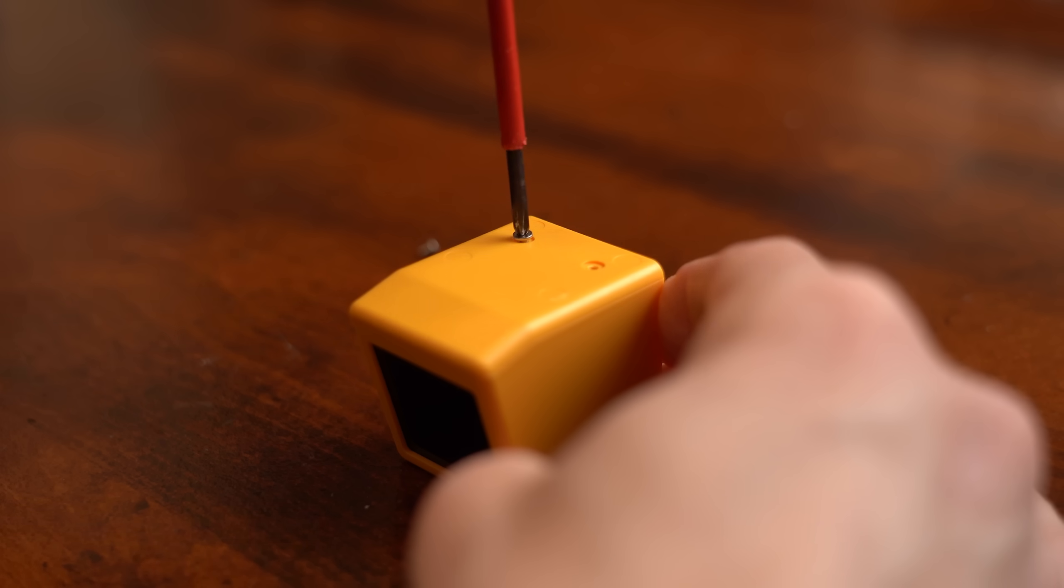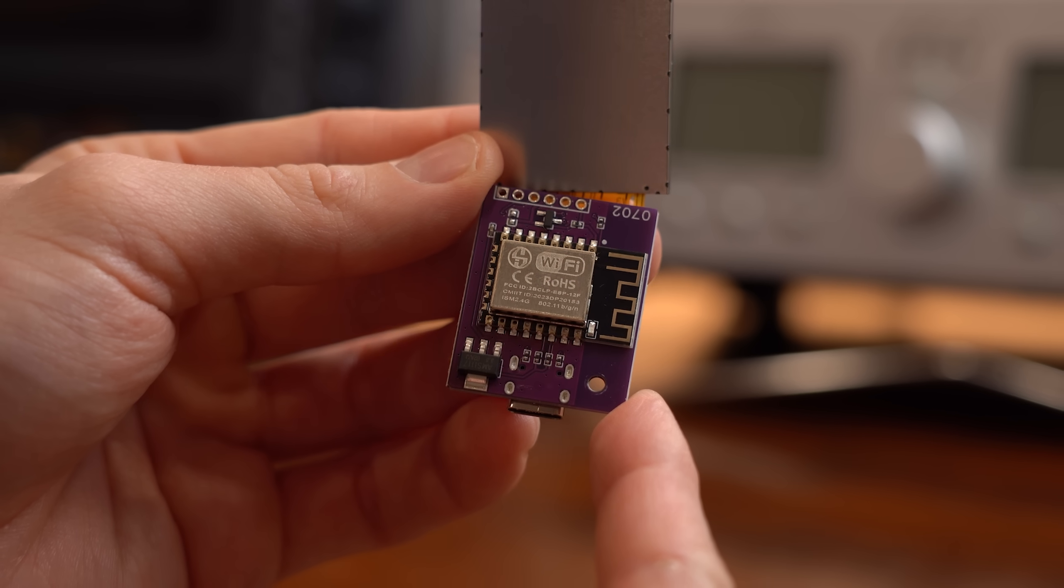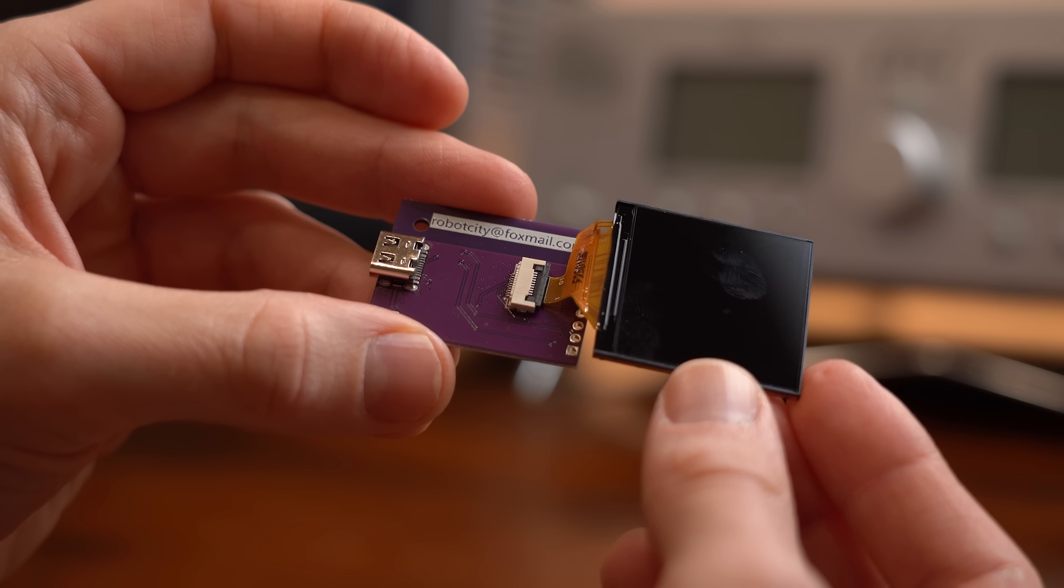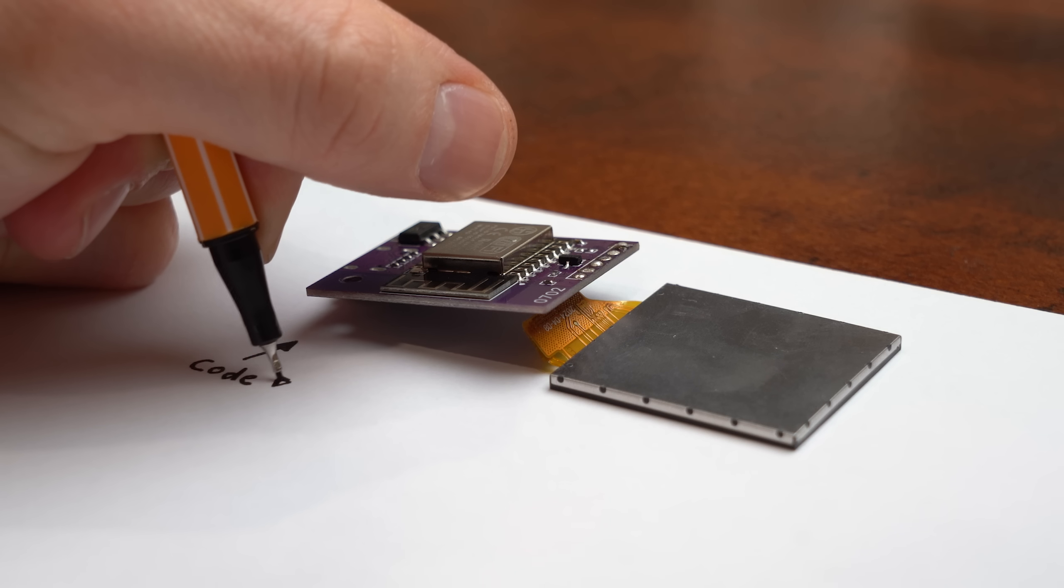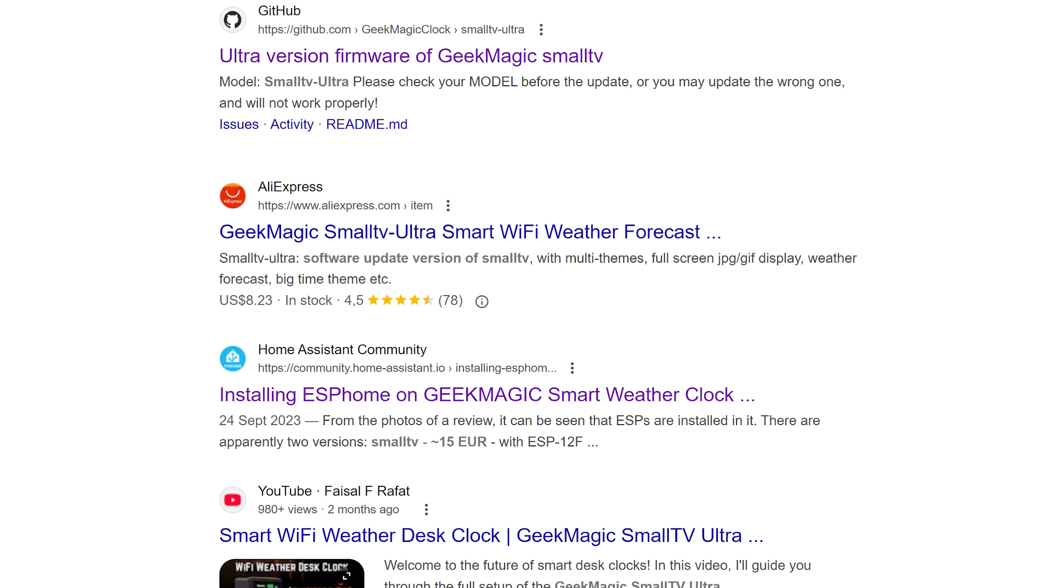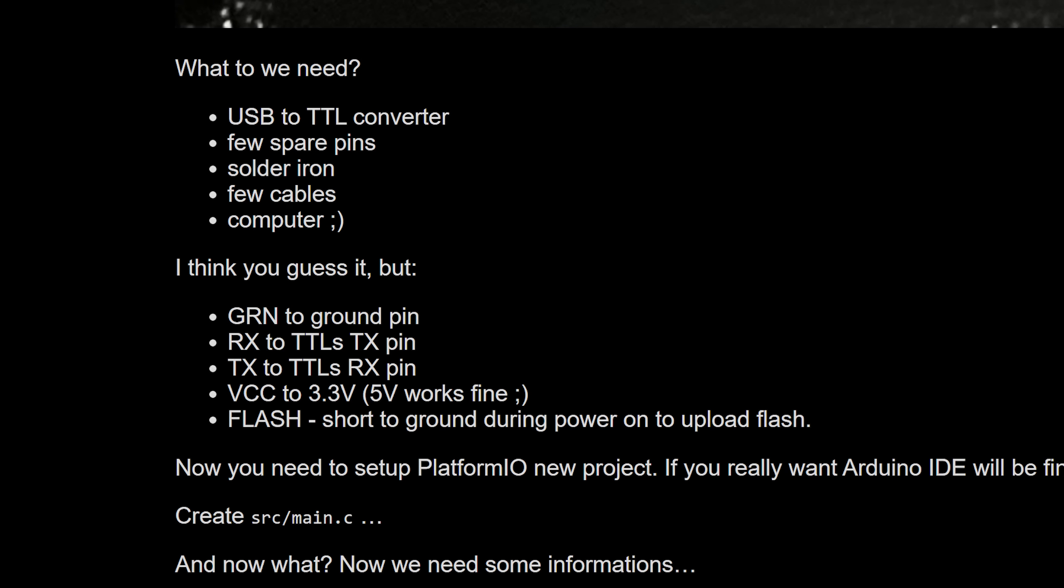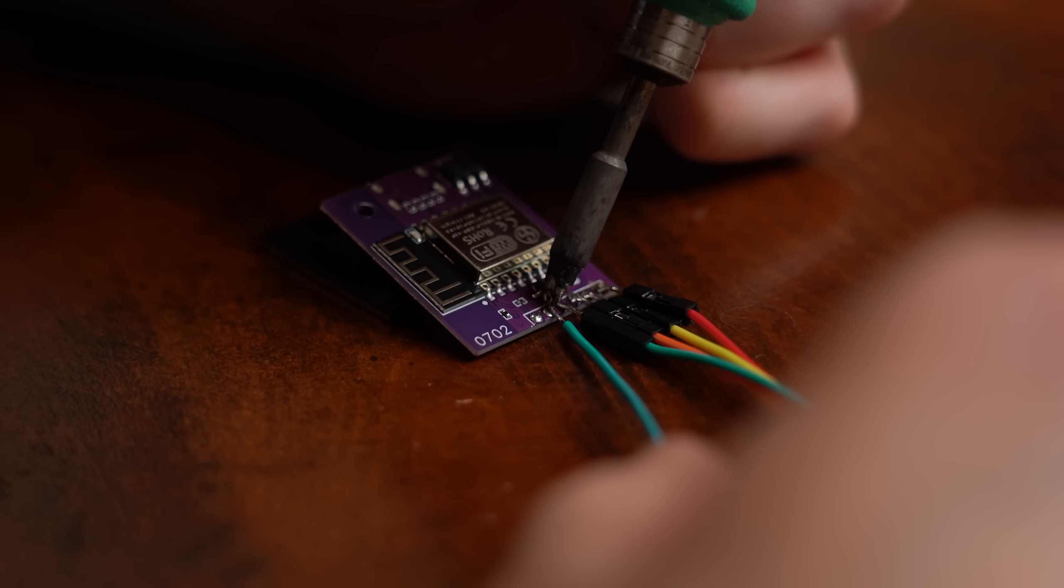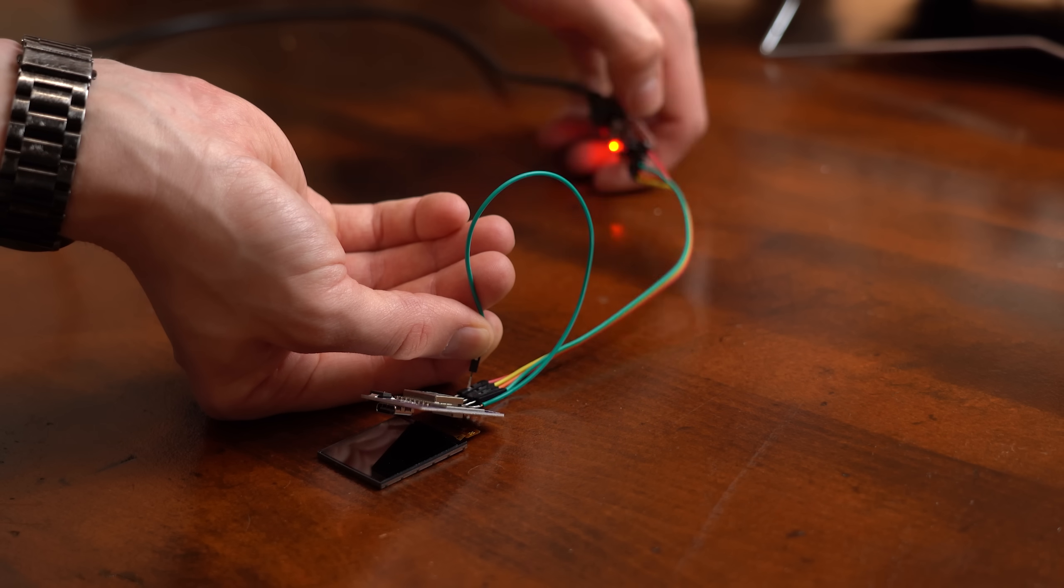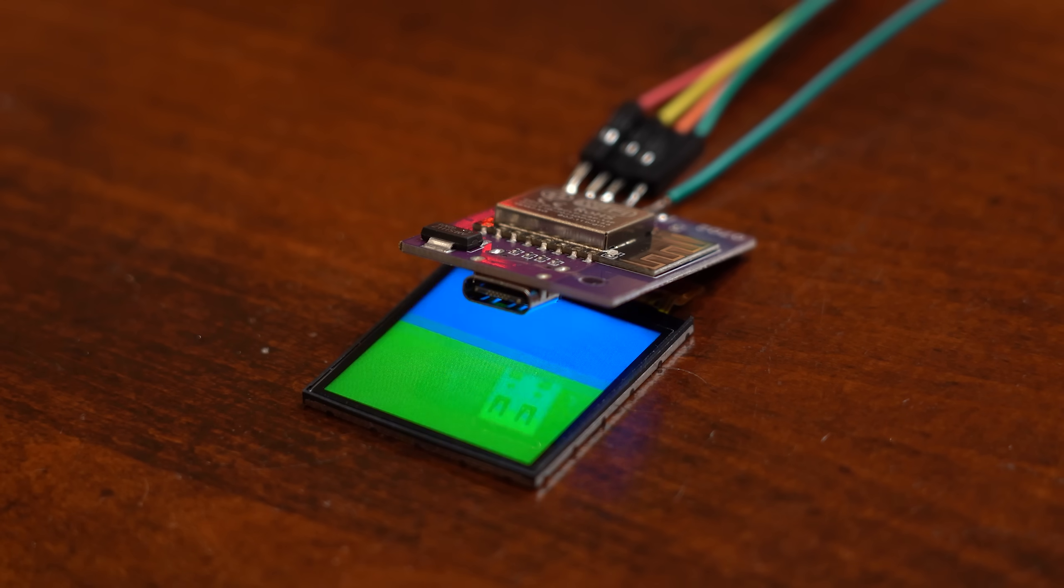This is not the end though because after taking this thing apart we can see that it simply consists of an ESP8266 and a screen meaning we should be able to upload our own code. And of course people on the internet already did that meaning I firstly followed this guide here to hook up a USB to serial converter which I then used to upload the given example code. And yes, that worked perfectly fine.